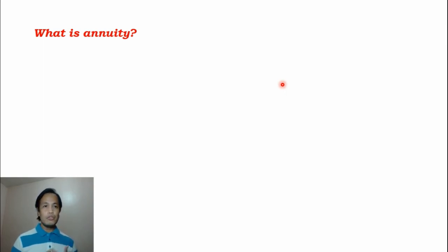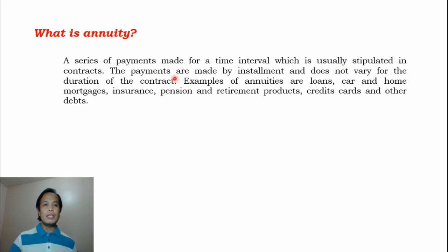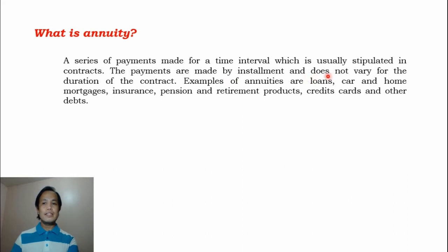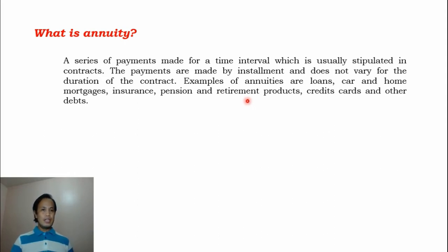Let us have our review first about the definition of annuity. I already presented this definition when we discussed simple ordinary annuity. But to review, an annuity is a series of payments made for a time interval which is usually stipulated in contract. The payments are made by installment and do not vary for the duration of the contract. Examples of annuities are loans, car and home mortgages, insurance, pension and retirement products, credit cards and other debts.